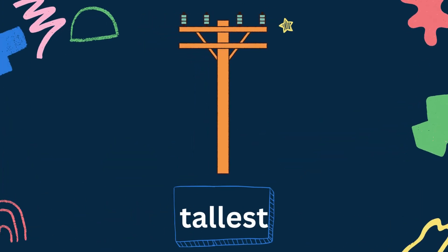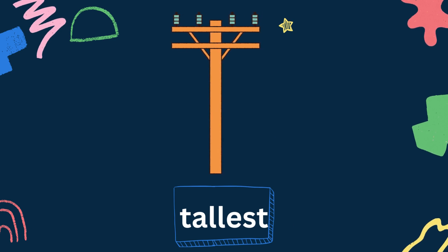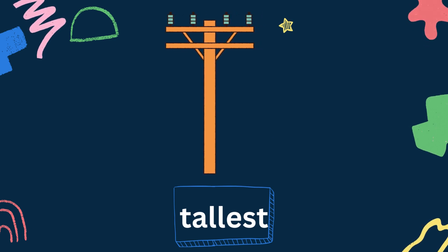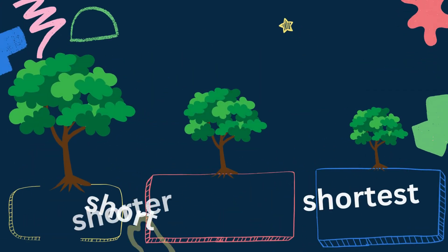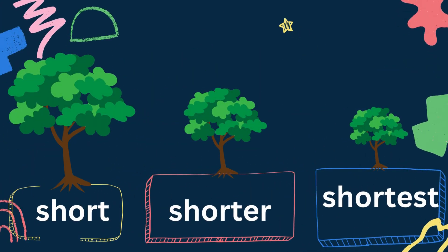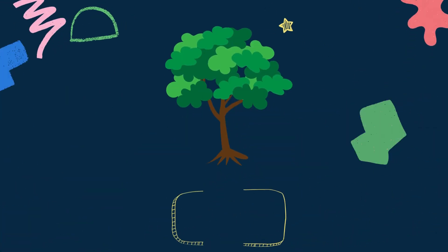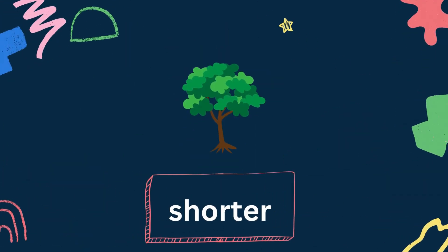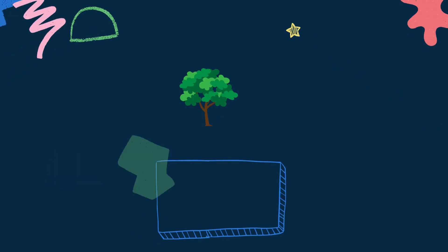The next one is short, shorter, shortest. This tree is short among all. The smallest one is the shortest. So short is bigger than shorter, and shorter is bigger than shortest.